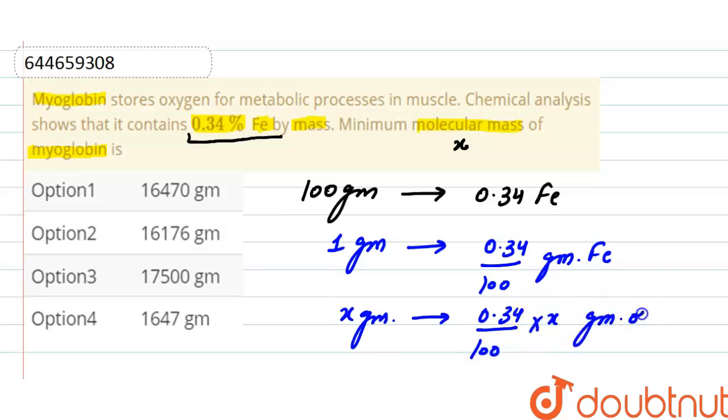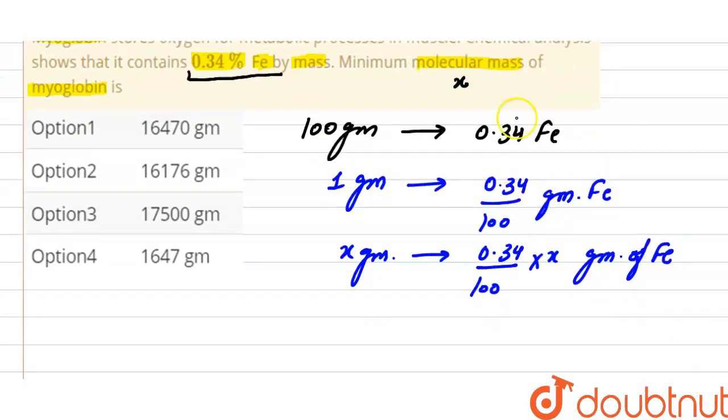And as we know, the molecular mass of iron is 56. And if in myoglobin this much gram of iron is present, that means 0.34 divided by 100 into X is equals to 56, because 56 is the molecular mass of iron.